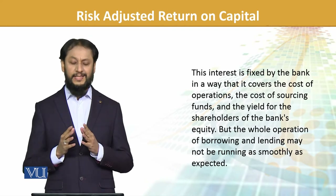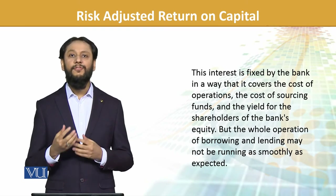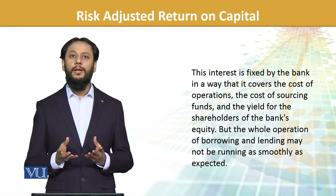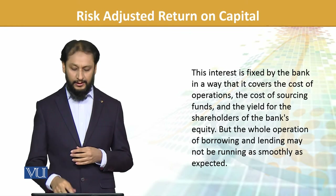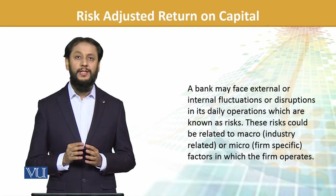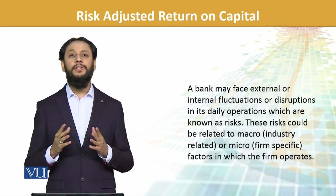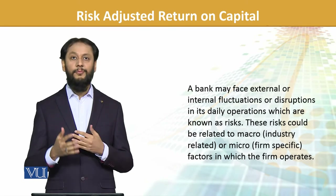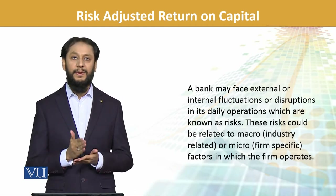The whole process of borrowing runs this way structurally, but actually it is not this smooth. There could be some factors that disrupt it. Theoretically it sounds very fair, but practically it does not always work out. A bank may face external or internal fluctuations or disruptions in its daily operations. These are what we call risks. These risks could be related to the macro level — an impact on the banking sector or the economy — or specific to your individual business with variations and fluctuations that could impact us.